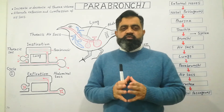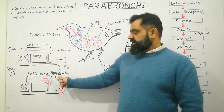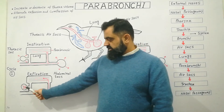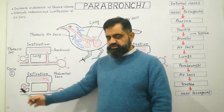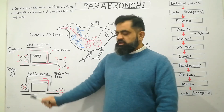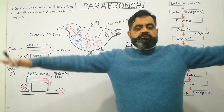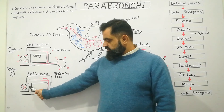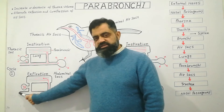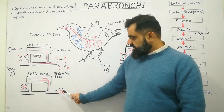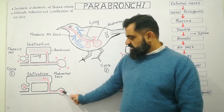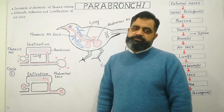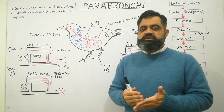Cycle one is completed during expiration, when both air sacs are compressed. The thoracic air sac compresses with the help of the muscles of the wings, bones, and ribs. When these air sacs are compressed, air moves from the thoracic air sac into the nasal passageway and out of the body. The fresh air present in the abdominal air sac, after compression, moves into the lungs and parabronchi. This completes the first cycle.